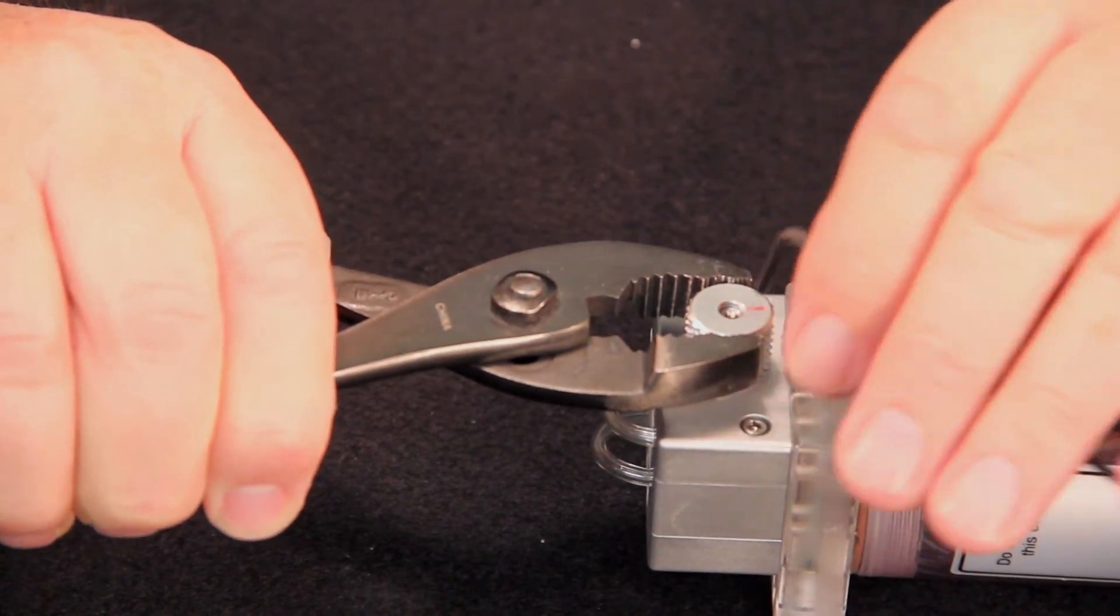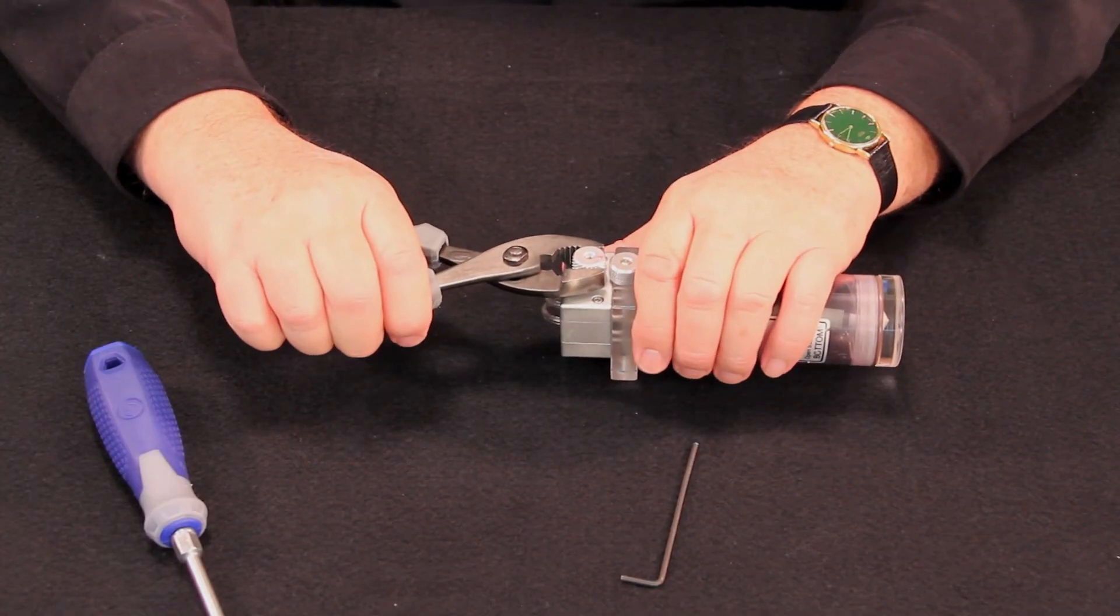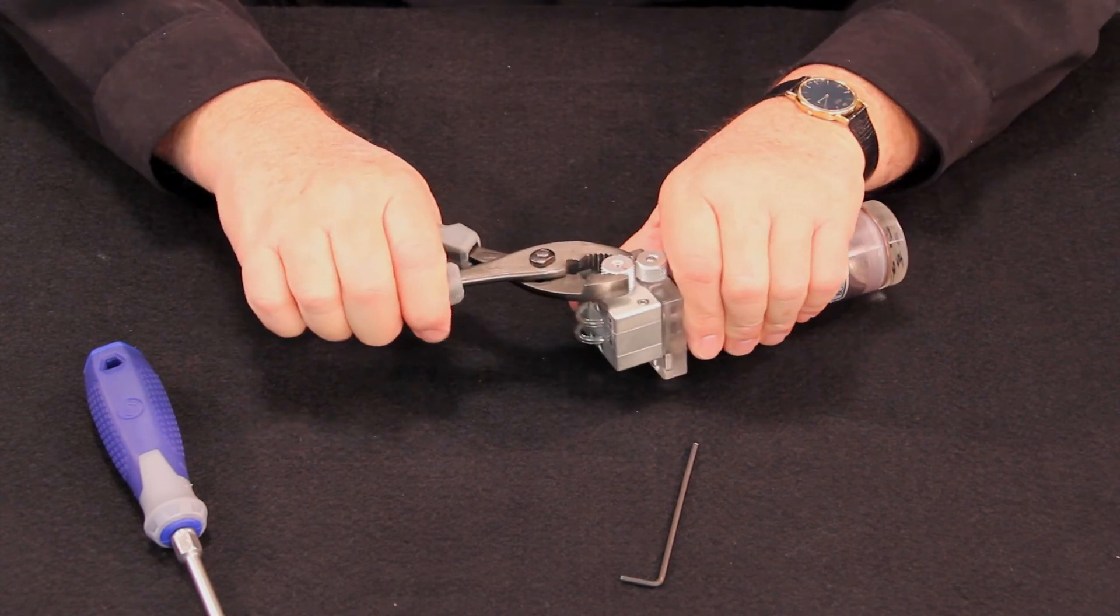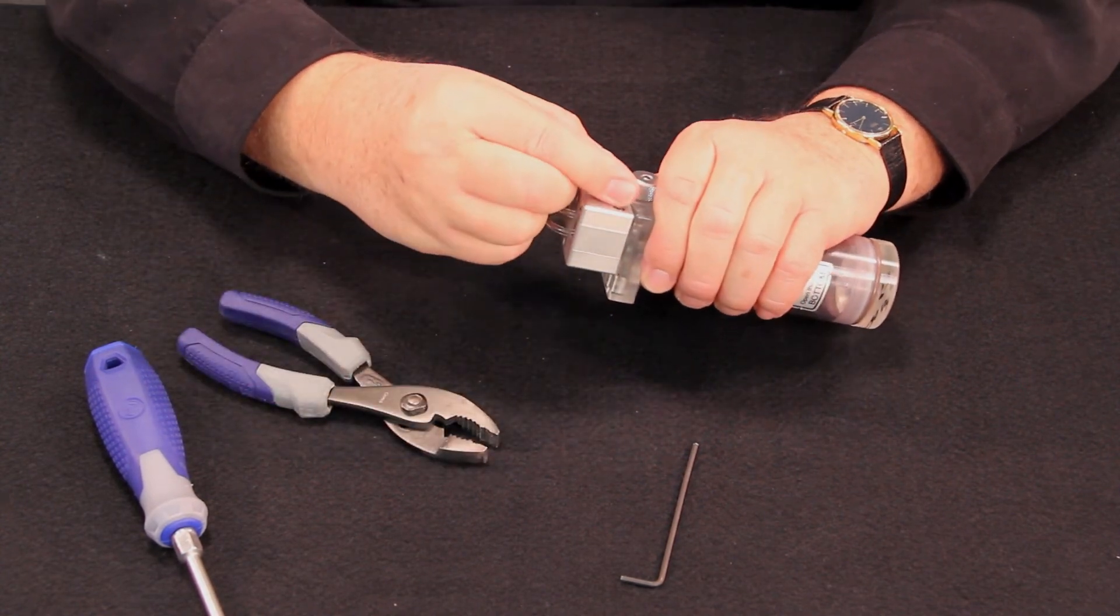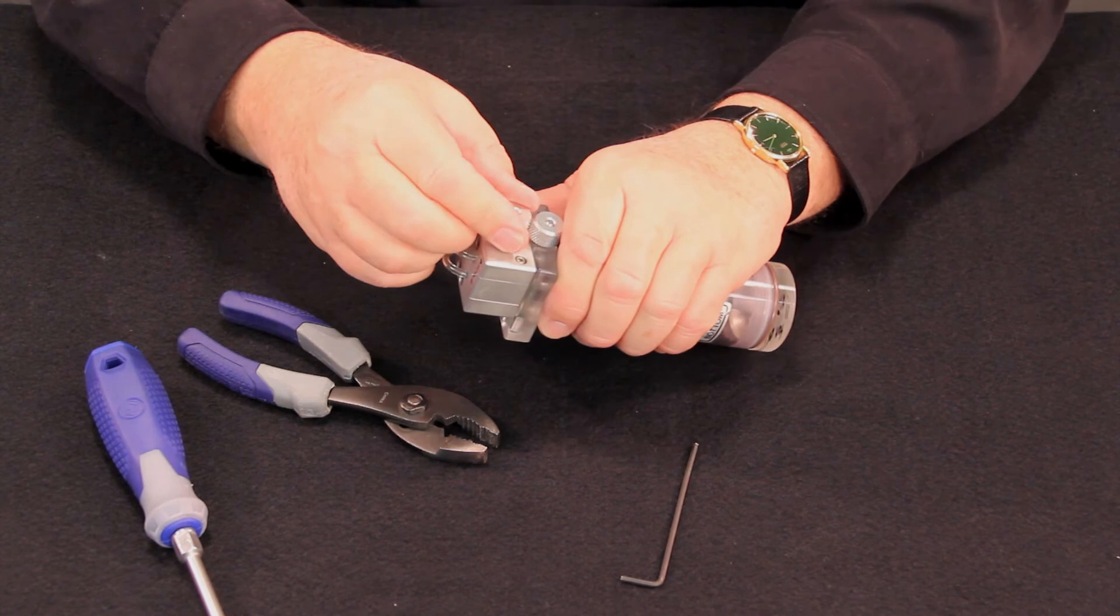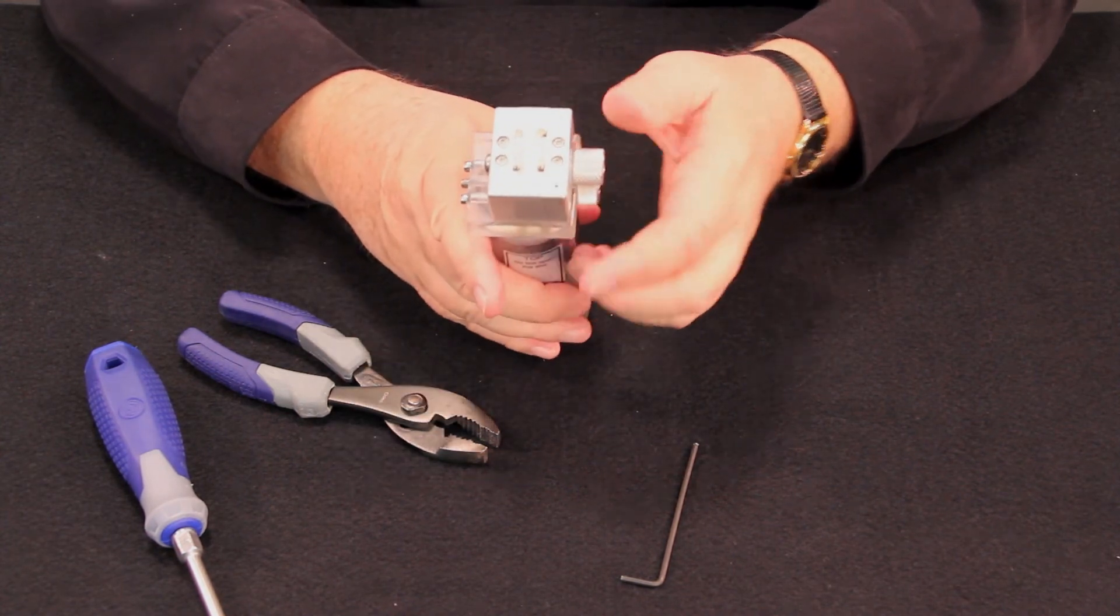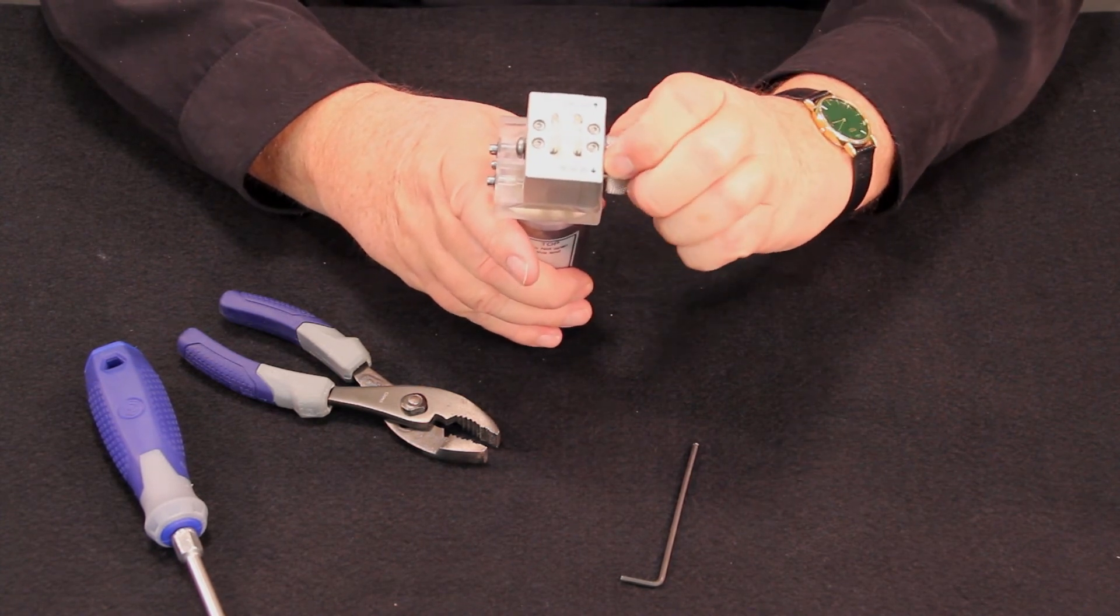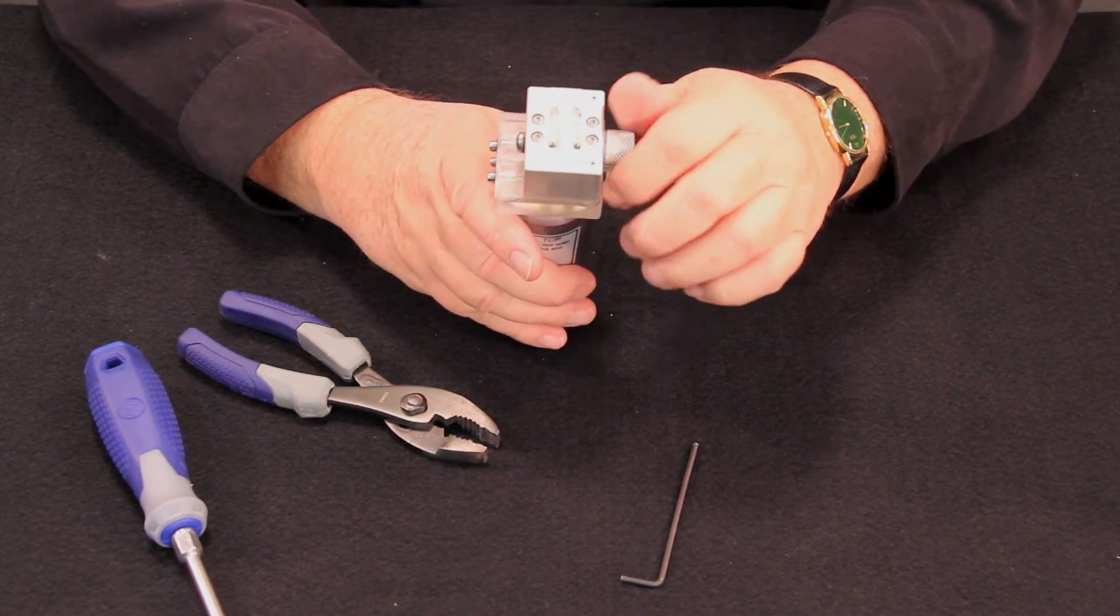Once the set screw is tight, you can back the flow control knob off one quarter turn and now check to see that the knob operates from full bypass to full scrub without coming loose from the Phillips head screw.